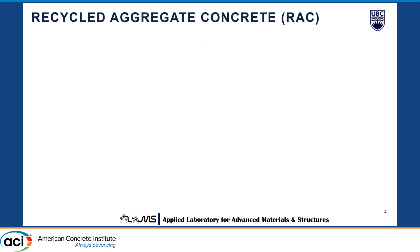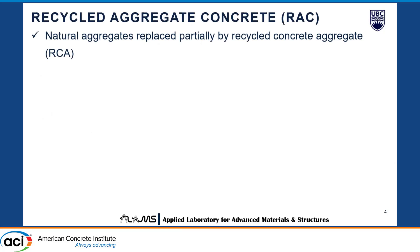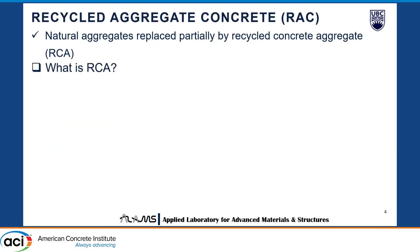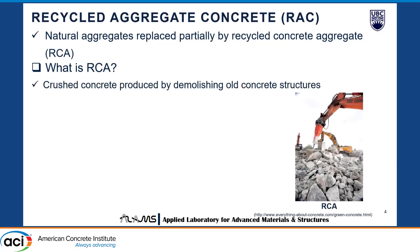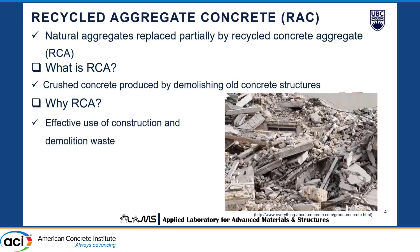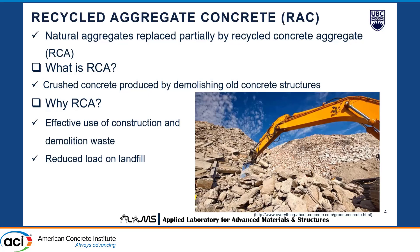What is recycled aggregate concrete? Whenever natural aggregates are replaced partially by recycled concrete aggregate or RCA, we call it recycled aggregate concrete. RCA is basically crushed concrete produced by demolishing old concrete structures. Why should we use RCA? About 52% by weight of the total annual solid construction and demolition waste is held by concrete in Canada. That's huge. This waste is just dumped in landfills, whereas we can effectively use it as aggregates in concrete, reducing the load on landfills, saving valuable space, and reducing demand on both coarse and fine natural aggregates.